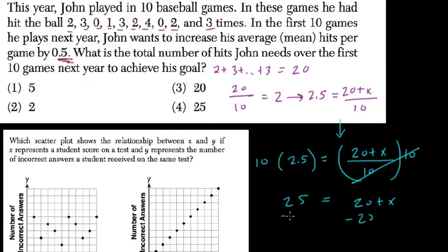And 20 plus x equals 25. Subtract 20 from both sides. And what? Well, x equals 5.